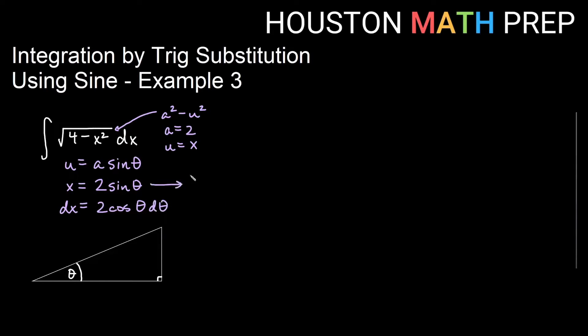If I rearrange this, sine theta would equal x over 2. And remember that sine is going to be the opposite over the hypotenuse in a right triangle. So I go ahead and look at my right triangle and assign x to be the opposite side and 2 to be the hypotenuse.